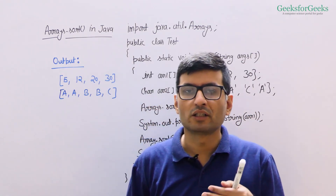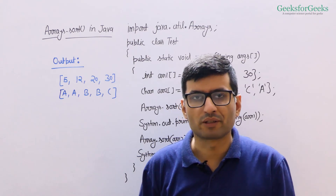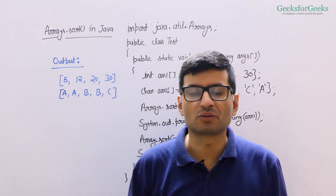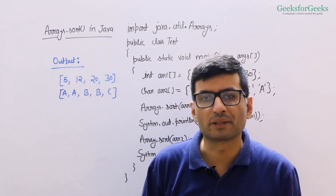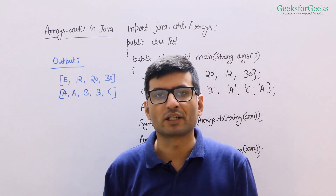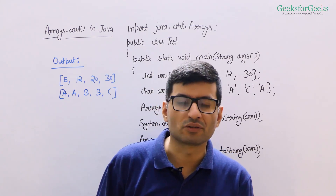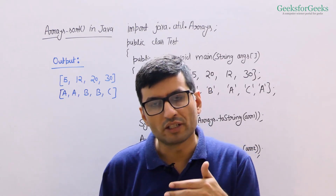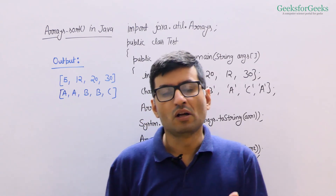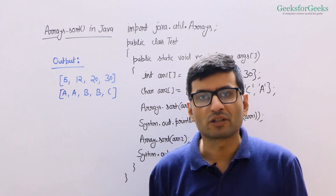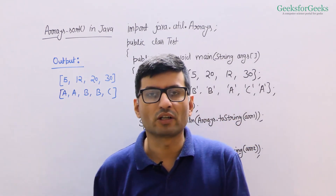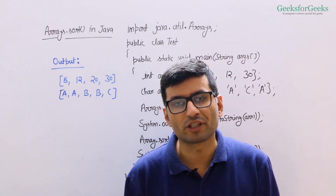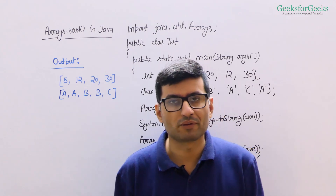An important thing about Arrays.sort for primitive types: when sorting a primitive array, Arrays.sort does not allow you to provide a custom comparator. You can only sort primitive types in natural order, which is increasing or non-decreasing order if there are duplicates. If you wish to sort in decreasing order, you can first call Arrays.sort and then reverse the array.